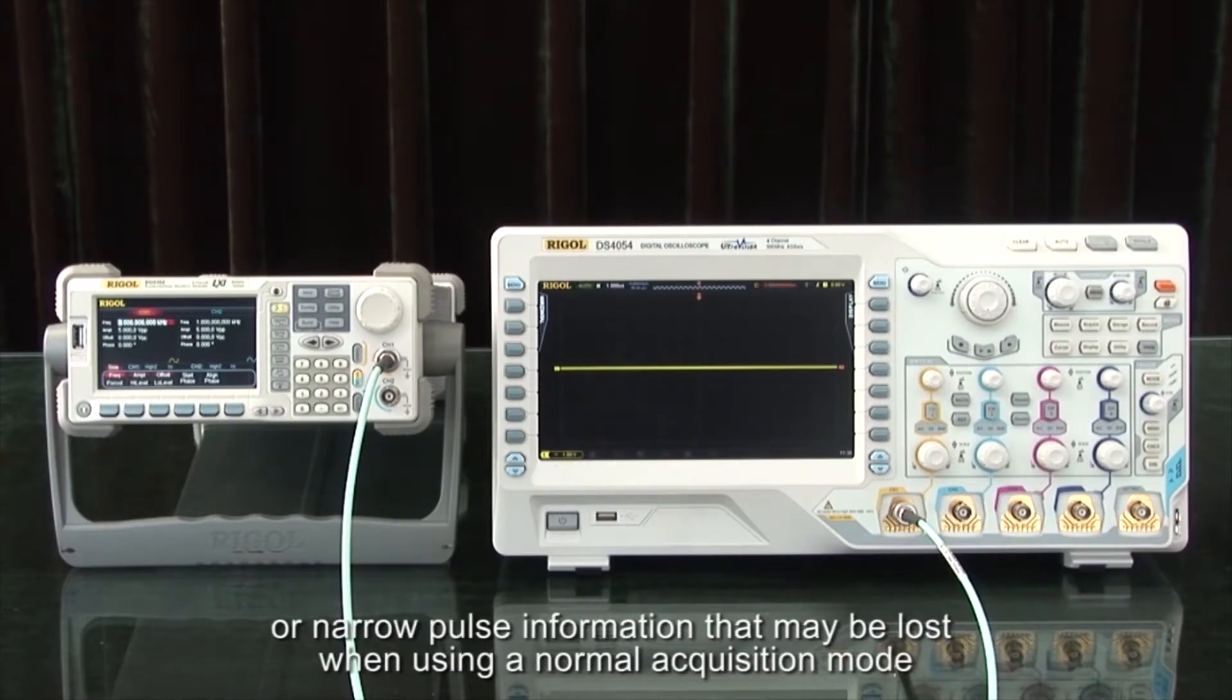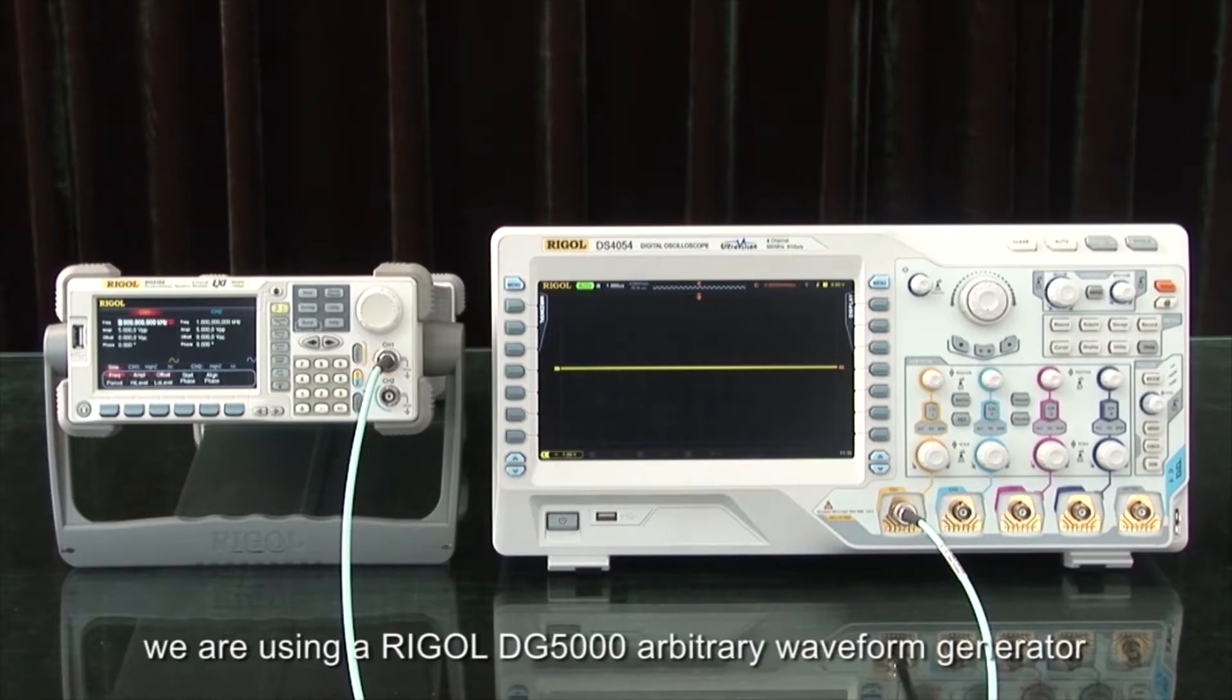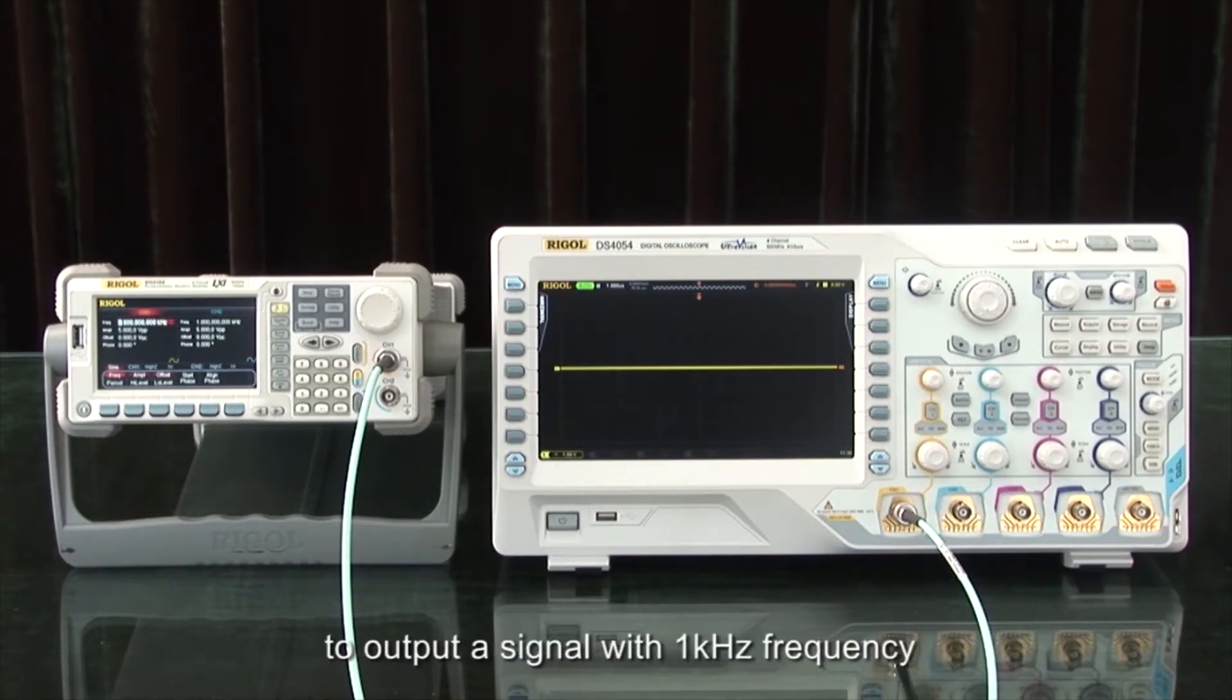Let's compare normal mode and peak detect mode. In this example, we are using a Rigol DG5000 arbitrary waveform generator to output a signal with 1 kilohertz frequency, 5 volt peak-to-peak amplitude, and a 10 nanosecond pulse width.